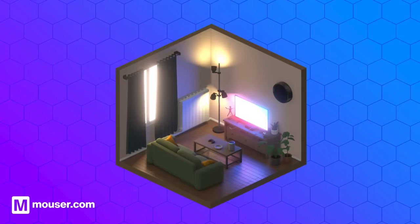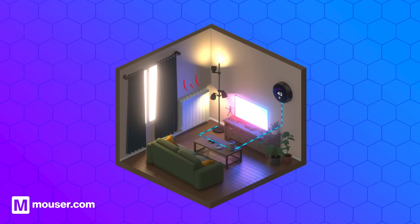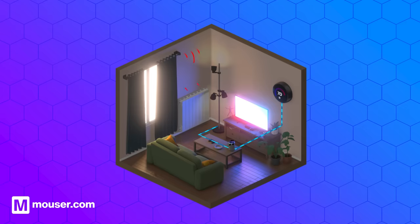Imagine a smart home system that adapts to your preferences. At its core, an MPU processes data from various sensors. From setting the room's temperature, dimming lights, or using voice control to play your favourite songs, the MPU interprets and acts on these commands.